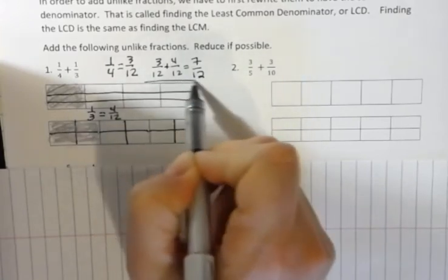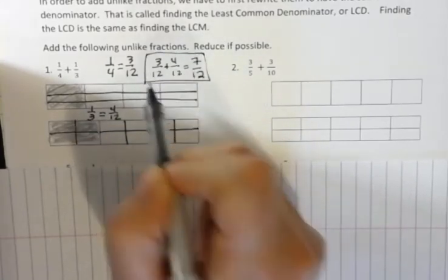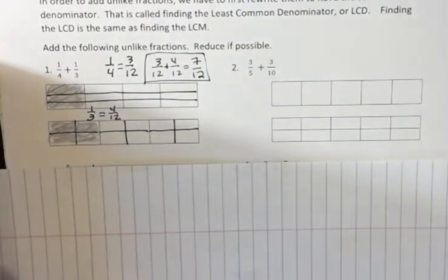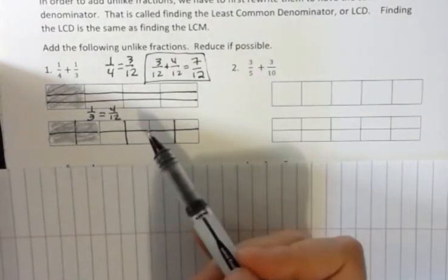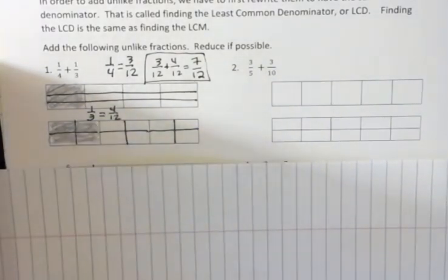Once I write them as like fractions, I keep the denominator the same and add the numerators. So, this is what's happening. We're rewriting those so that we can add those together.